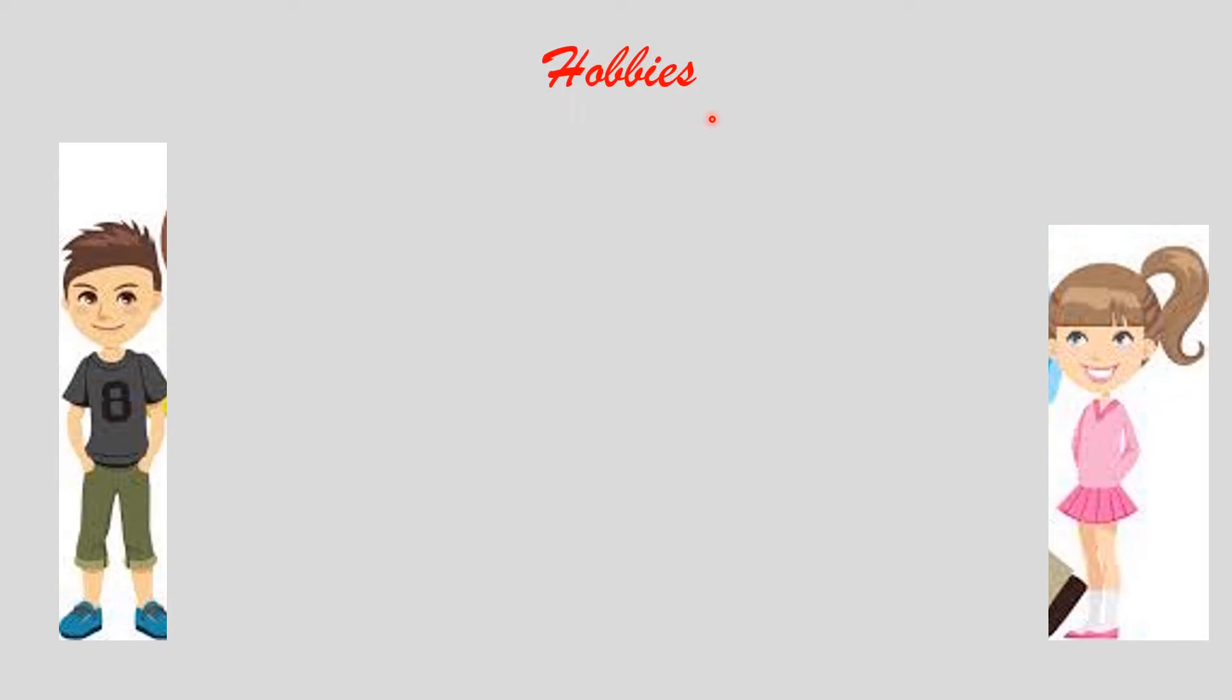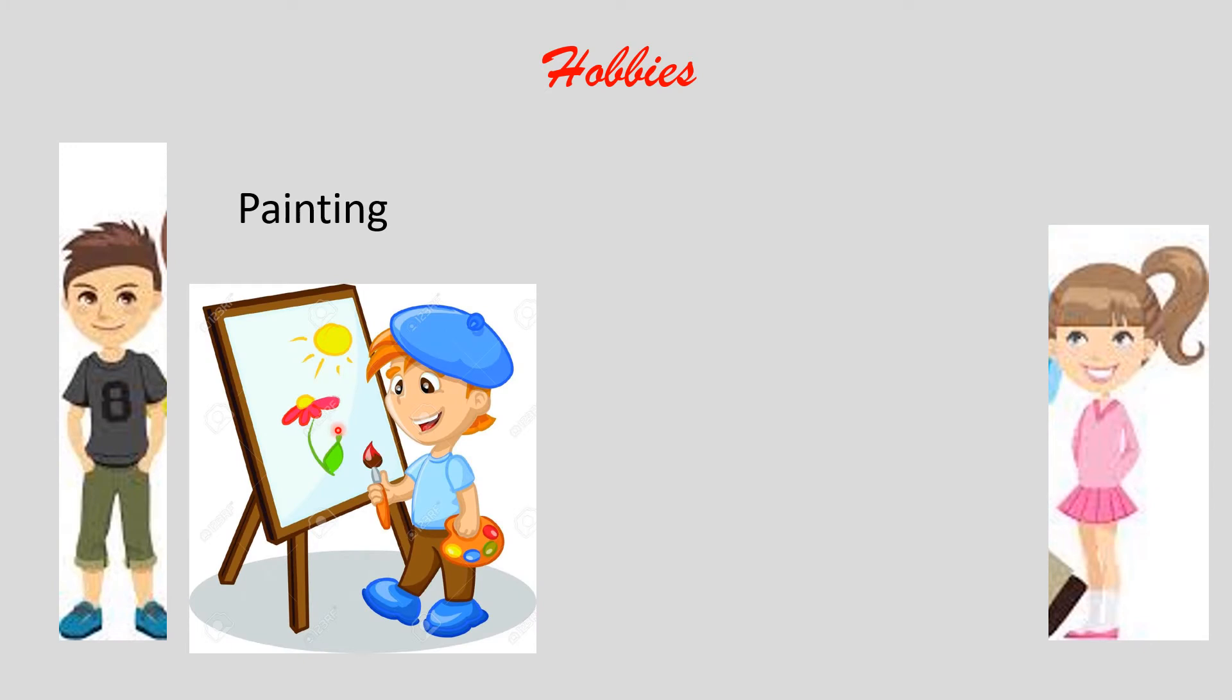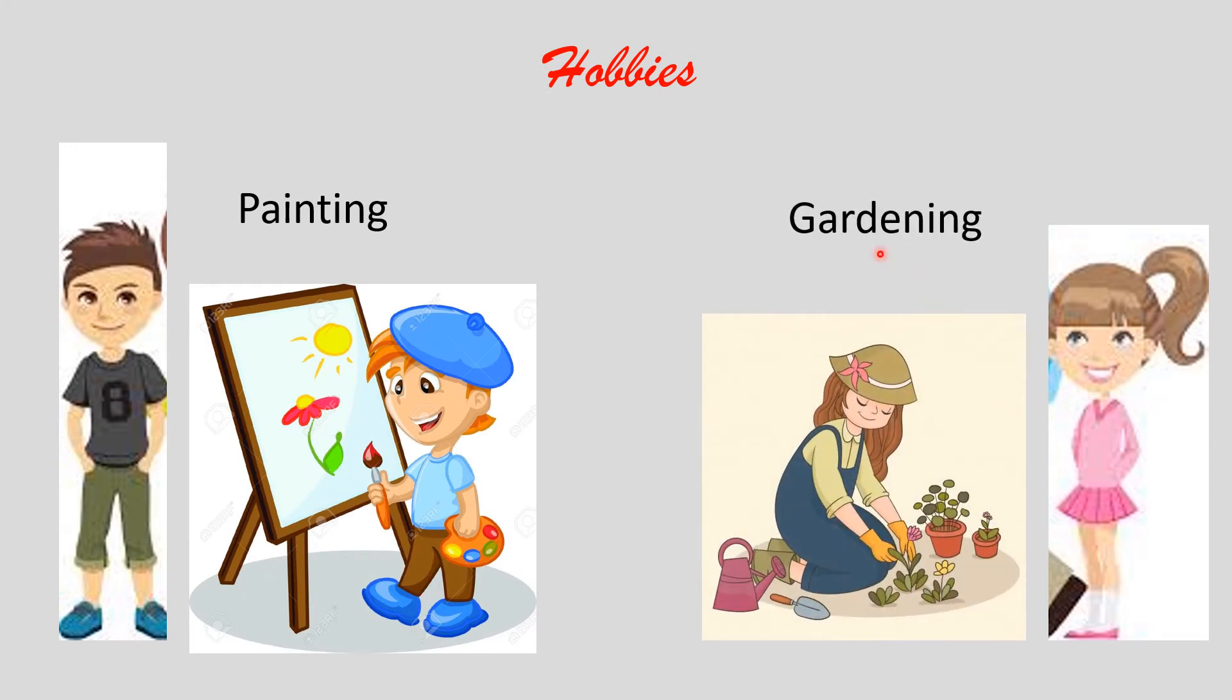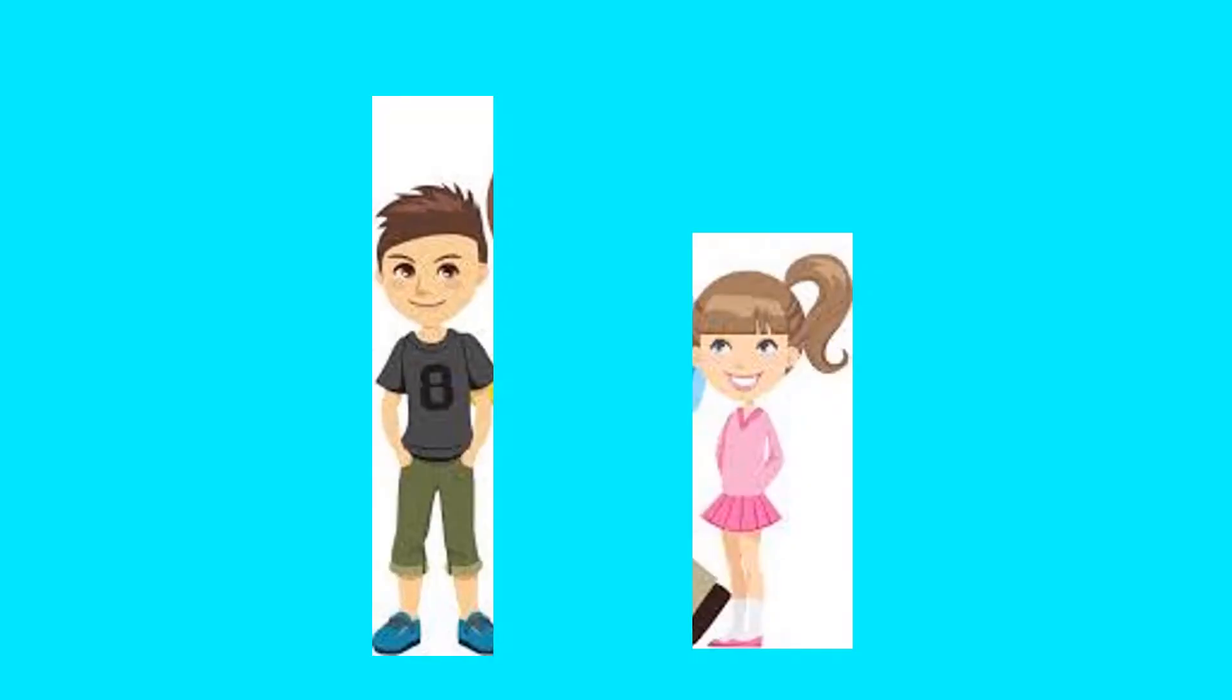Their hobbies. Rohit, he enjoys painting. And Riya enjoys gardening. So you see children, they are so different. Rohit is a boy and Riya is a girl. So you see, they are yet different. He is a boy and she is a girl.